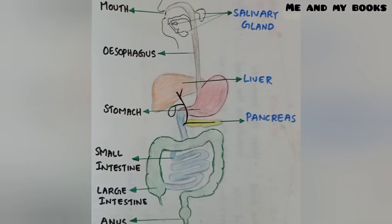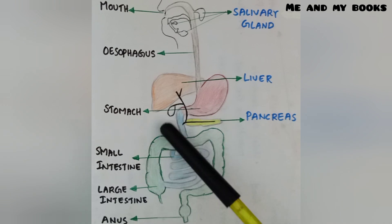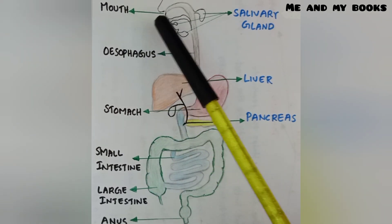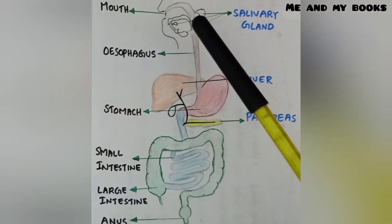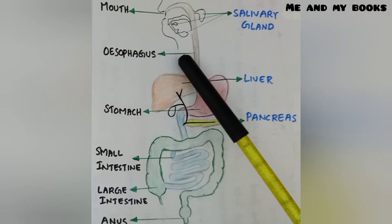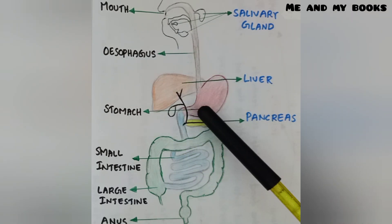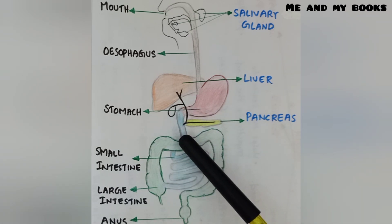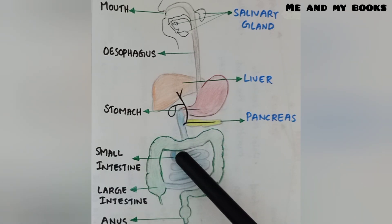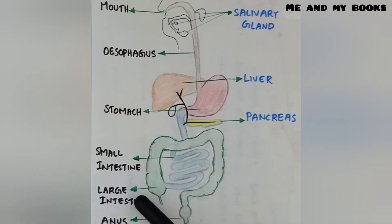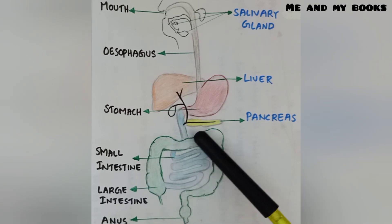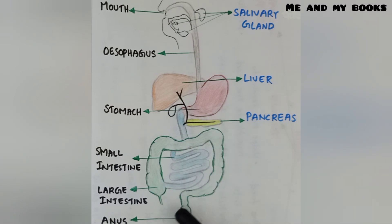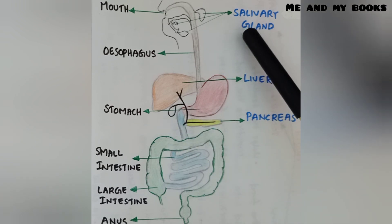Now let us see the human digestive system. This system helps in the digestion process. It includes different parts: mouth is the first part, which leads to a pipe-like structure called the esophagus. The esophagus then opens into the stomach, which opens into the small intestine — a highly coiled structure. It then opens into the large intestine, which finally opens out through the anus.